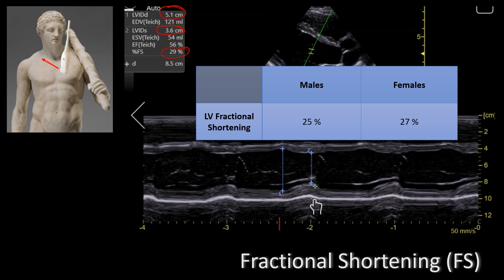In this table we're looking at the normal values for left ventricular shortening. If the endocardial left ventricular shortening is less than 27 percent in females and less than 25 percent in males, these are markers of left ventricular dysfunction. In this patient the fractional shortening is 29 percent and that was a male, so this is a normal fractional shortening for this patient.